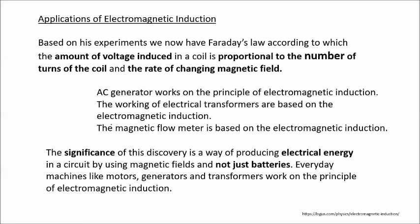The applications of electromagnetic induction are based on Faraday's law: the amount of voltage induced in a coil is proportional to the number of turns and the rate of change in magnetic field. The AC generator works on the principle of electromagnetic induction. Electrical transformers are based on electromagnetic induction. The magnetic flow meter is also based on electromagnetic induction. Everyday machines like motors, generators, and transformers all work on the principle of electromagnetic induction.